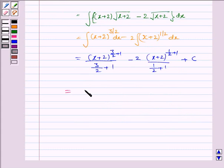So this is again equal to x plus 2 to the power 5 by 2 upon 5 by 2 minus 2 into x plus 2 to the power 3 by 2 upon 3 by 2 plus c.